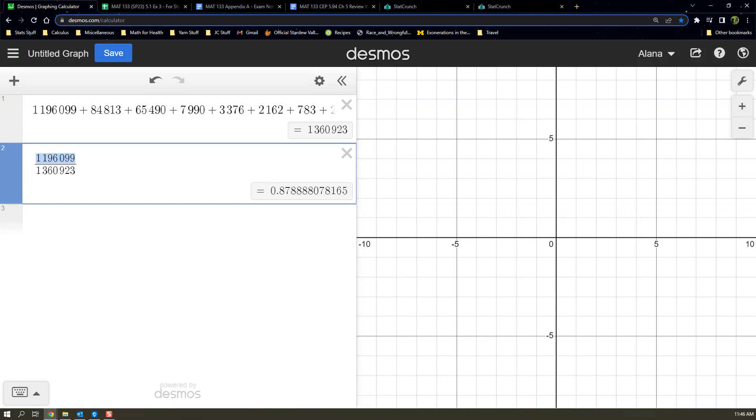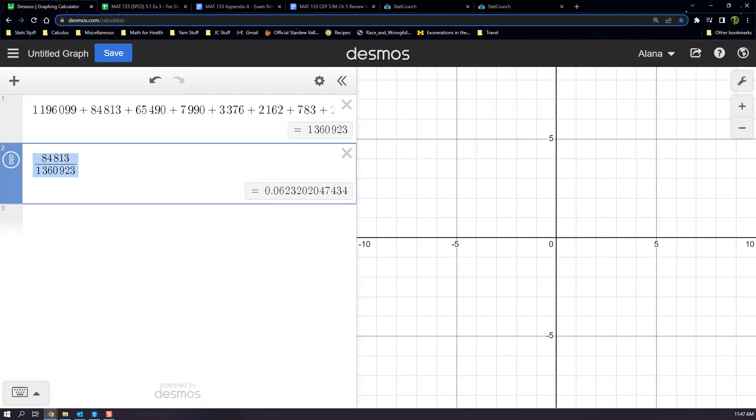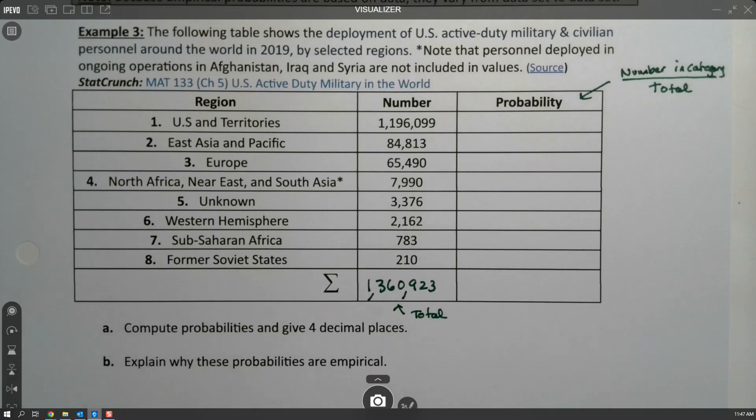If I'm in Google spreadsheet it's real easy. I just say equals this cell divided by 1,360,923, enter, and there they all are. If I want less decimal places I can just highlight them and click on this decimal place position. I think they wanted four decimal places in this example, so I'm going to do four. Obviously Google spreadsheet's a little faster, but you don't always have access to it. You can do it all yourself with Desmos - it's just tedious.